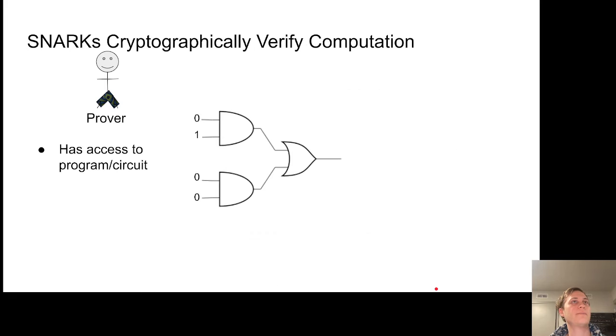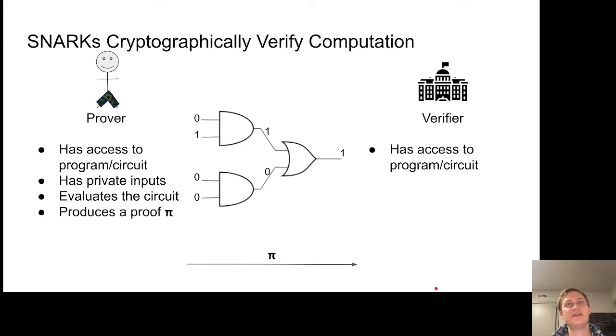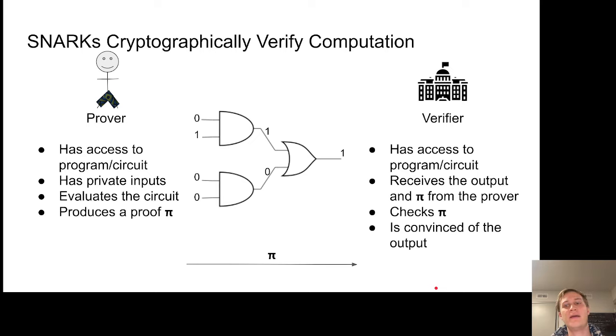So what is a SNARK? A SNARK is something that cryptographically verifies a computation. We have a prover, in this case Blevins, and Blevins has access to this program or circuit which you could think of as maybe the Lean kernel that checks a formal proof. Blevins also has all the private inputs that he's developed by creating this formal proof of TamRef's First Theorem. Blevins can evaluate the circuit and produce this proof π that he can send to the agency. The verifier also has access to the program that verifies proofs. They're going to receive this π, check it, and be convinced that Blevins has actually created this proof.